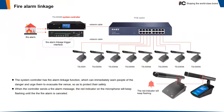For automatic camera tracking, once you press the conference unit, the camera will follow to the preset position directly. For fire alarm linkage, once a fire alarm is triggered, a short circuit signal enters the controller, and the controller sends out the fire alarm signal to alert people to evacuate.